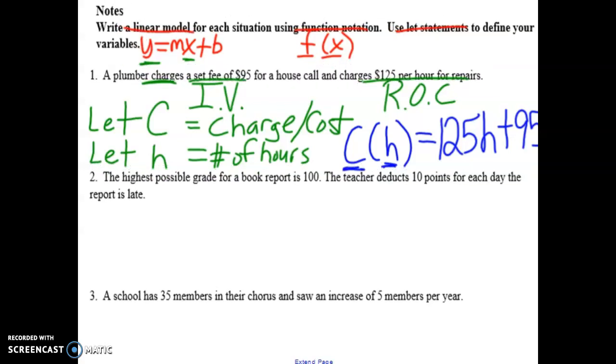Next one. The highest possible grade for a book report is 100. That makes sense. The teacher is using a point scale out of 100. The teacher will deduct 10 points for each day that it is late. Which one of those is the initial value? Which one's the rate of change? Hopefully you saw the starting value of 100 as the initial value. And the fact that this is going down 10 points per day is the rate of change.